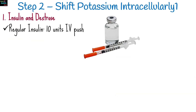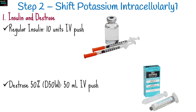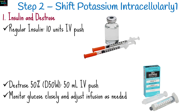The second step is to shift potassium intracellularly with insulin and dextrose. 10 units of regular insulin is administered, followed by 50 mLs of 50% dextrose. Glucose should be monitored closely and infusion adjusted as needed.